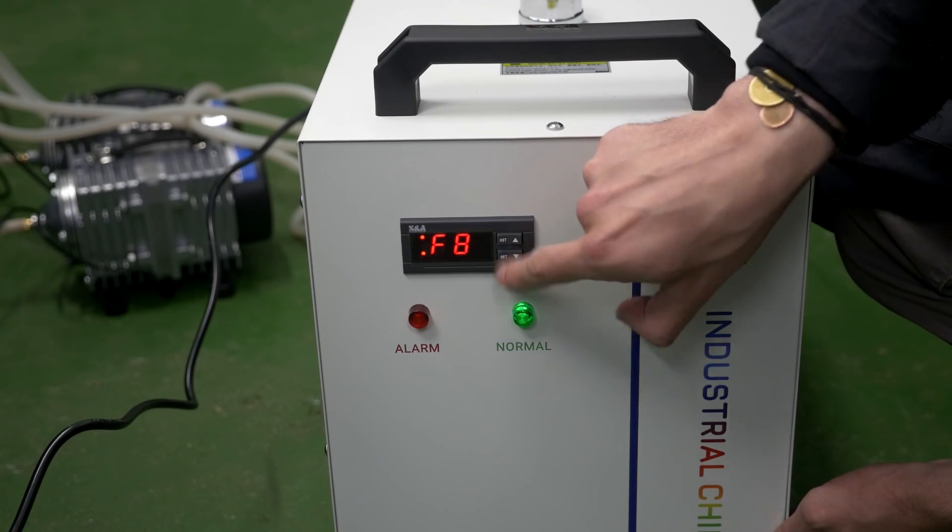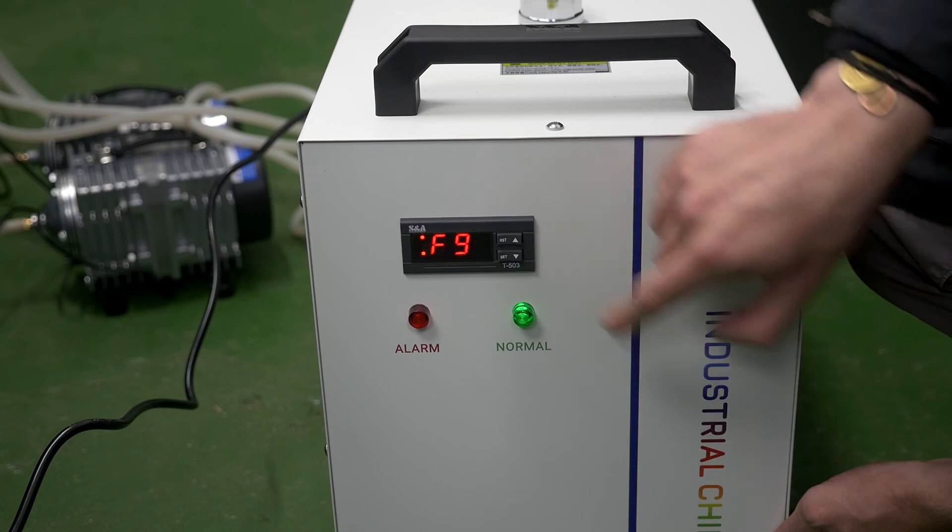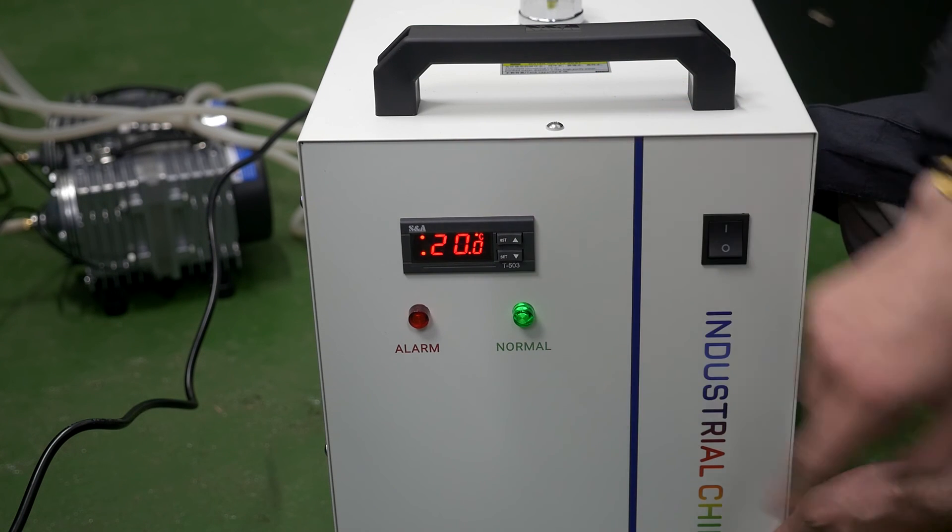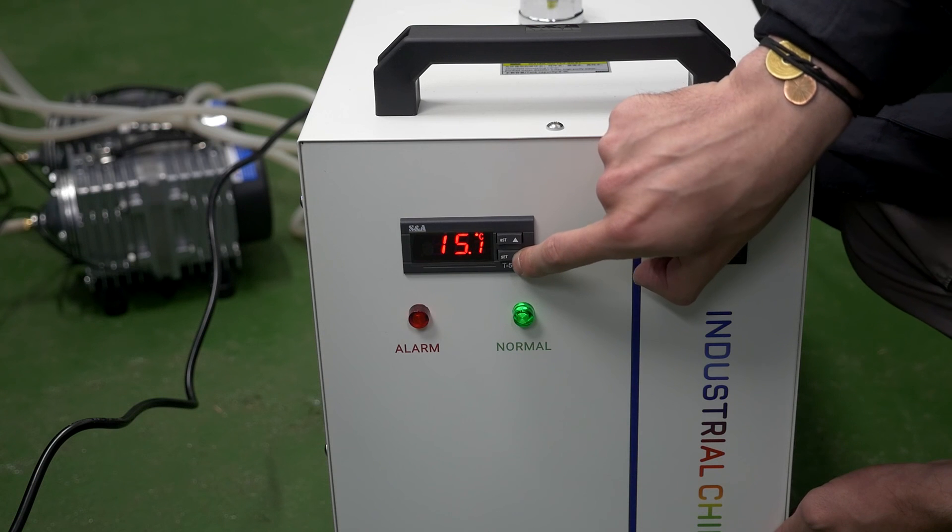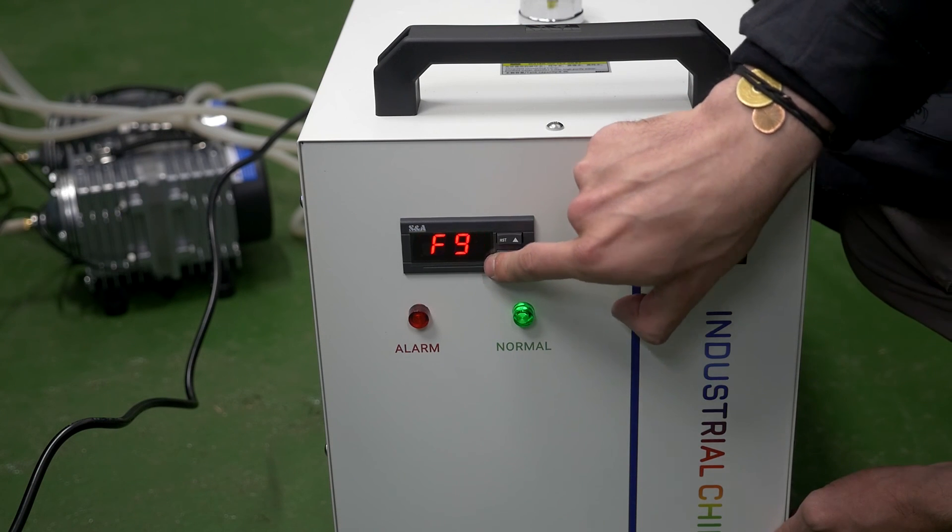Select F9 and press set. Set the value in the range 12 to 18 but not below the dew point of your room and press set. This parameter sets the lower limit of the chiller water temperature.